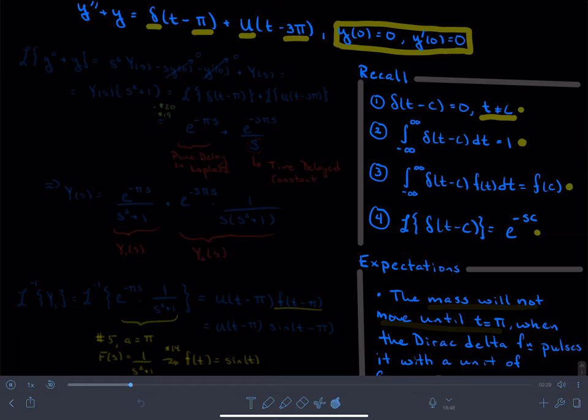Without multiplying any other functions, this step function is zero up until three pi seconds, and then at three pi seconds it turns on and it applies one newton, let's say, of force in the downward direction.